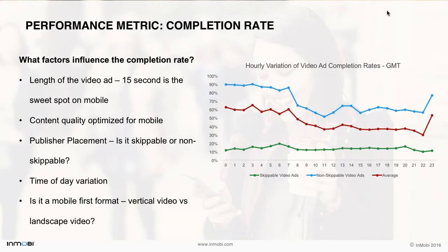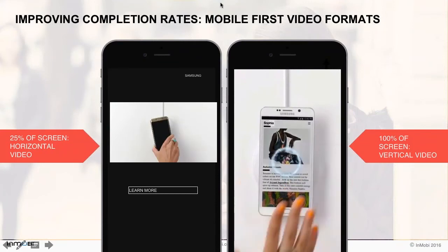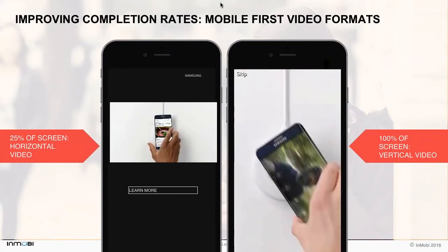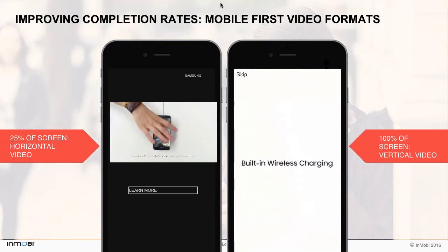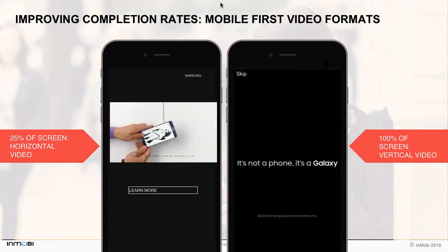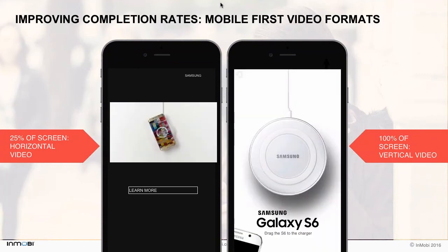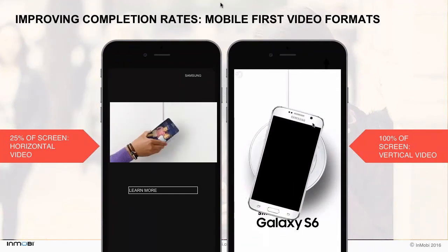The graph here shows how completion rates vary across each hour of the day — highest right at the beginning up until around 8 or 9 o'clock, and then rising again post 10 p.m. in the evening. Finally, are you thinking about mobile video ads from a mobile-first lens? Leveraging mobile-first video formats such as vertical video ensures you are adapting your message to the user's preferred device orientation, which is portrait. 99% of mobile devices are designed to be used in portrait mode — a vertical video occupies 100% of the screen versus just 25% for a 16:9 landscape video.